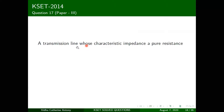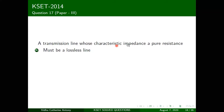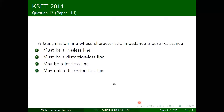For transmission lines: a transmission line whose characteristic impedance is a pure resistance. There is a typo in the question options. We need to know the conditions for lossless and distortionless lines. For a lossless transmission line: G = 0 and R = 0.